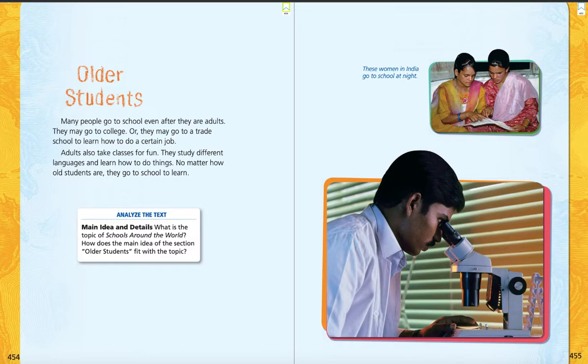Older students is at the top of page 454. Many people go to school even after they are adults. They may go to college or they may go to a trade school to learn how to do a certain job. Adults also take classes for fun. They study different languages and learn how to do things. No matter how old students are, they go to school to learn. We have a picture at the top — it says, these women in India go to school at night. And it looks like the picture at the bottom is a man using a microscope. And I think that's the end of our story.